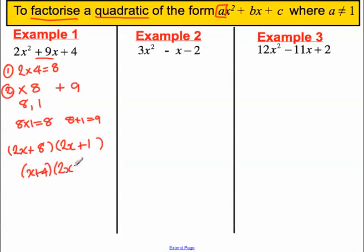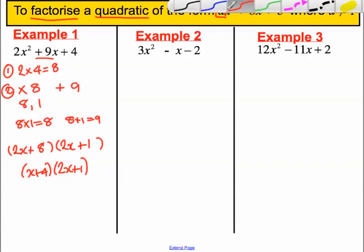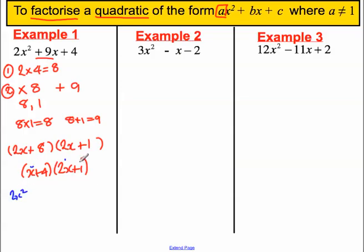Let's just check that indeed is the factorised version. Well, x times 2x is 2x squared. x times the 1 gives you x. 4 times the 2x gives you 8x. And 4 times the 1 gives you 4.